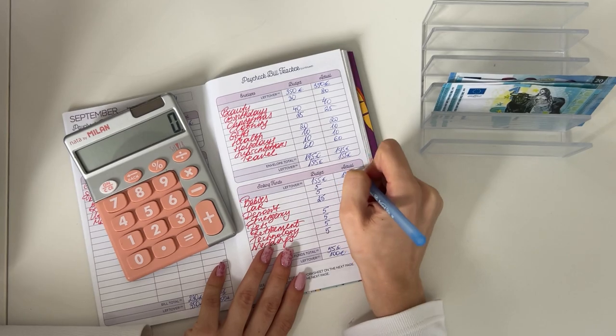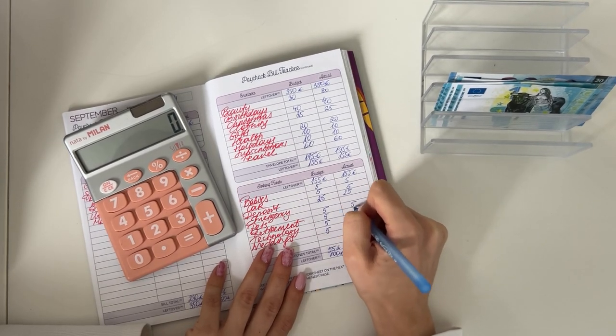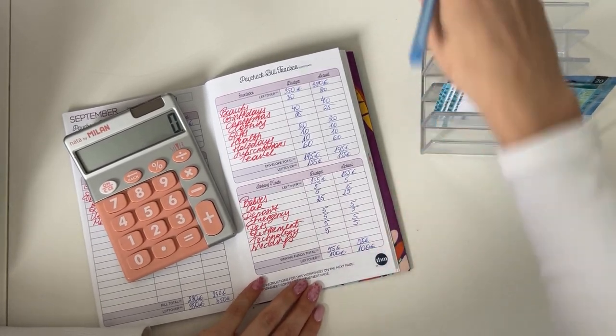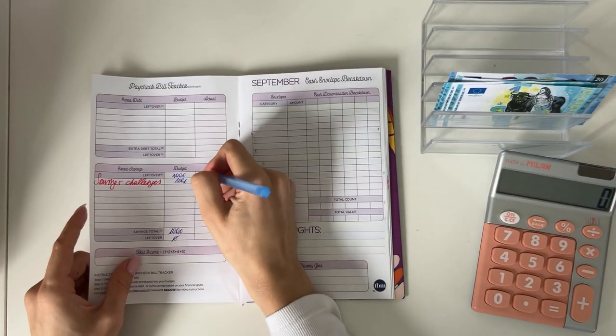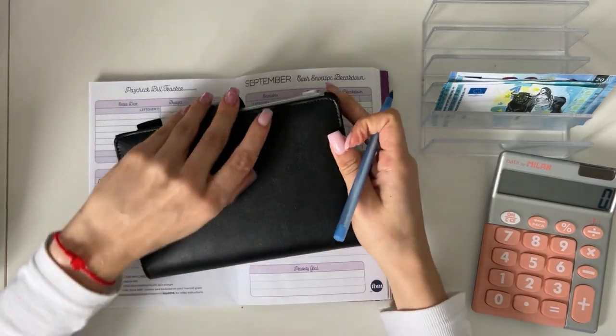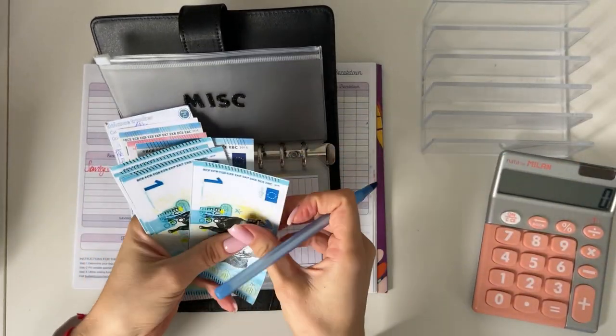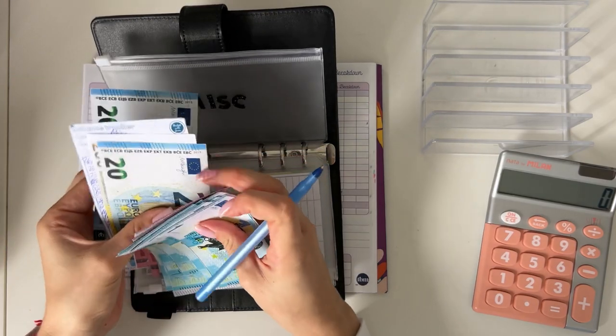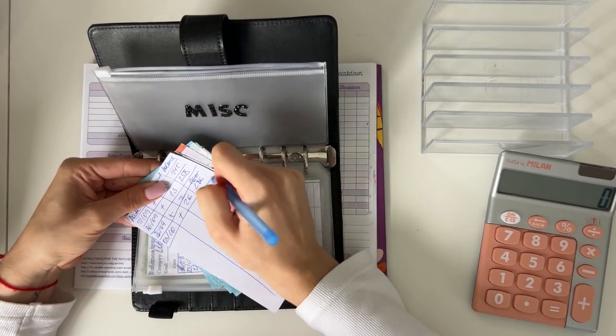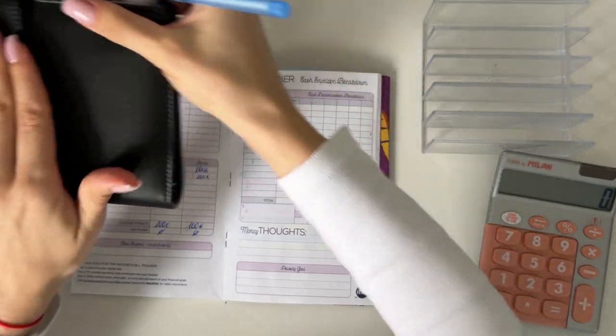In long-term sinking funds: 5 in babies, 5 in car, 25 in deposit, 5 in pets, retirement, technology, and weddings each. That's 55. 155 minus 55 is 100, and that hundred went into the savings challenges. Let's add this into the miscellaneous rollover amount, so 26 we're adding today.